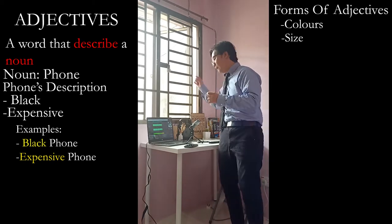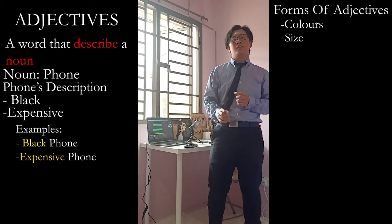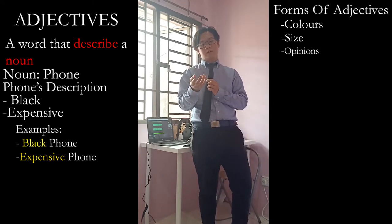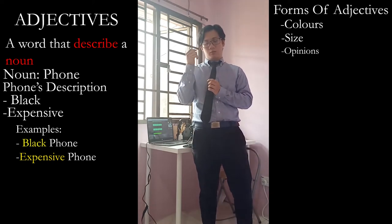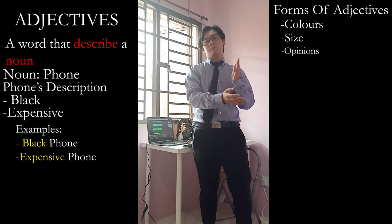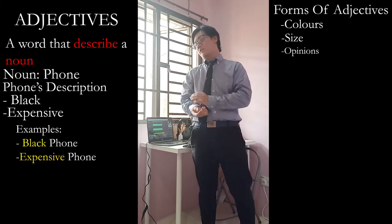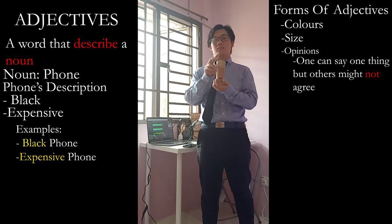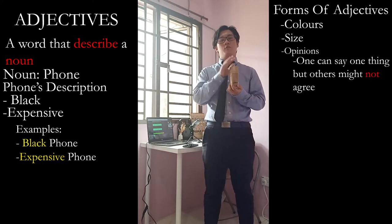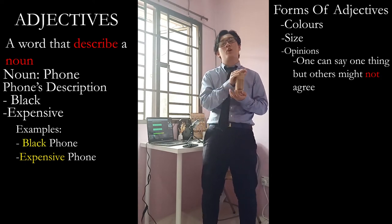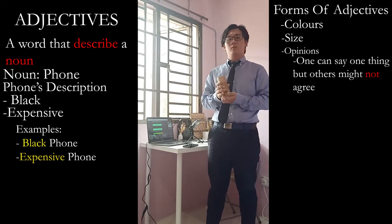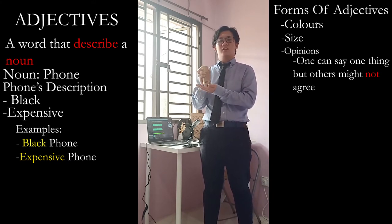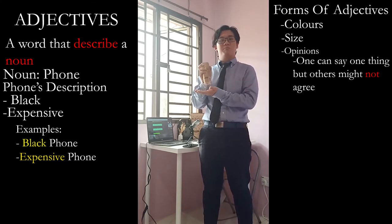The last form is opinions. Opinions are a tricky one because one person would say one thing, but then another might not agree. For example, coffee. One would say, coffee is delicious — this is a delicious coffee. But another can say, this is not delicious.